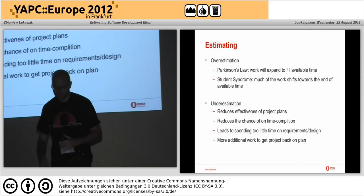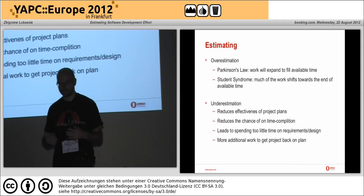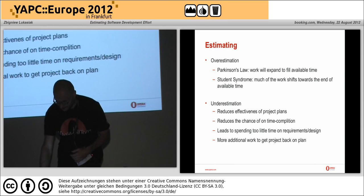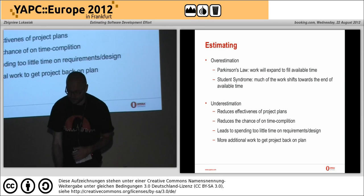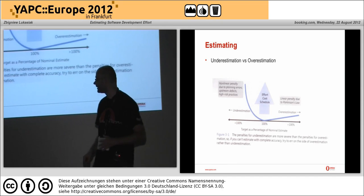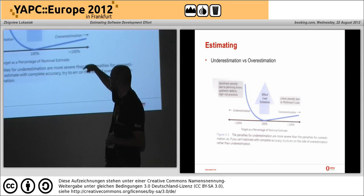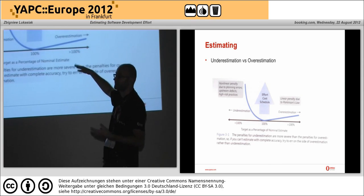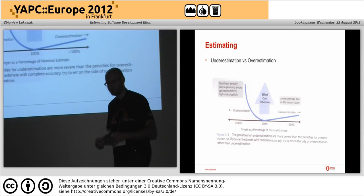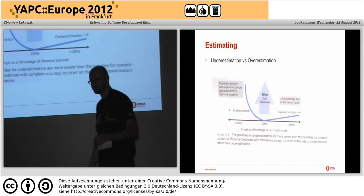With underestimation you also have additional work: going to meetings to explain why it is late. It also leads to spending less time on requirements and design, making future work even worse. The cost of underestimation is exponential or worse than linear, while the cost of overestimation - taking into account Parkinson's law and Student Syndrome - is mostly linear. So it's better to overestimate.